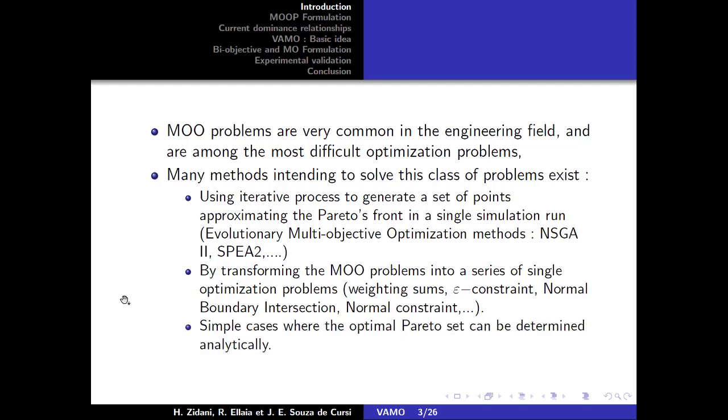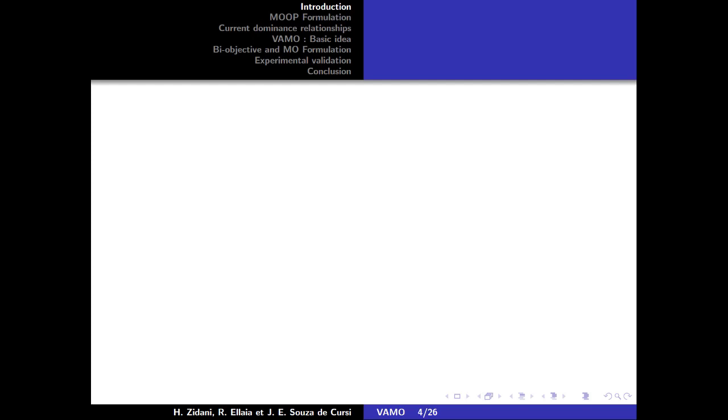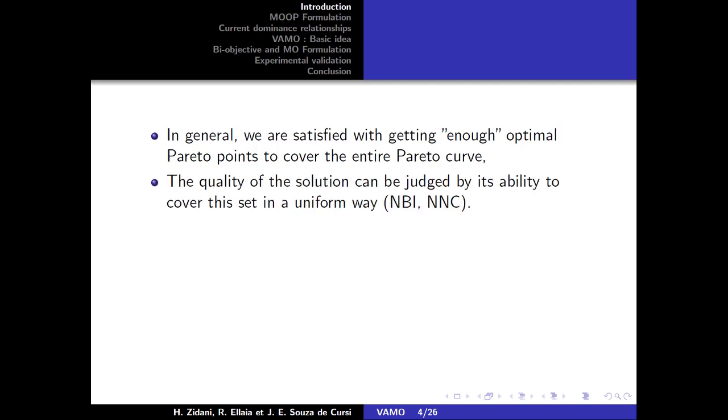Only simple cases where the optimal Pareto set can be determined analytically. In general, we are satisfied with getting enough optimal Pareto points to cover the entire Pareto curve. The quality of the solution can be judged by its ability to cover this set in a uniform way, like NBI and NC.